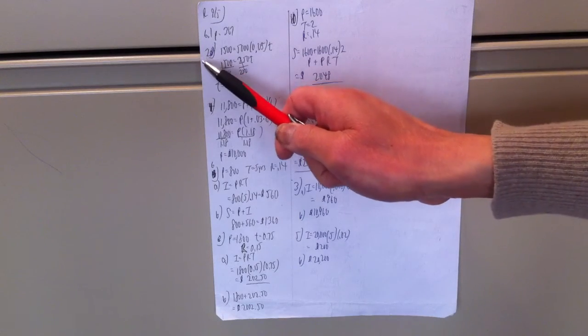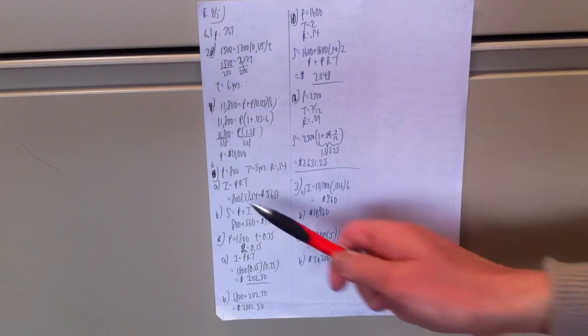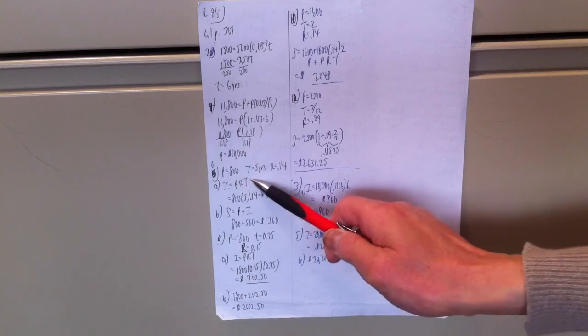This is problem 2. We're just plugging everything into the formula. Interest equals principal times rate times time.